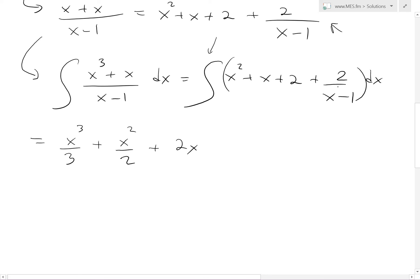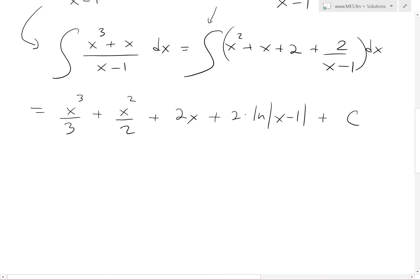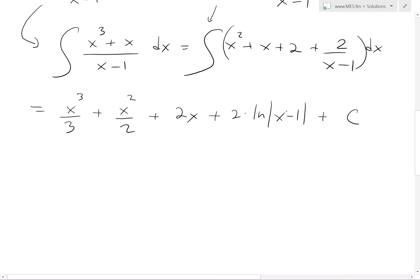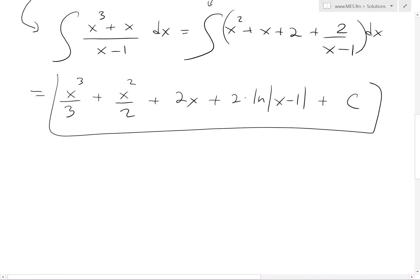The integral of 2/(x - 1) is 2 ln|x - 1|, plus C. See the proof in my video link below. So our final answer is x³/3 + x²/2 + 2x + 2ln|x - 1| + C.